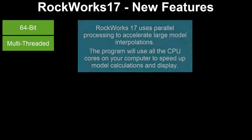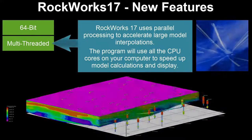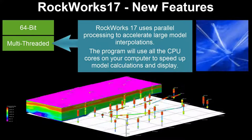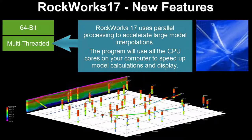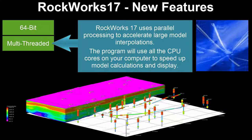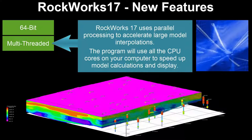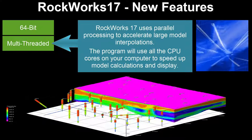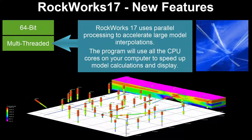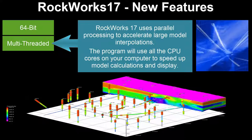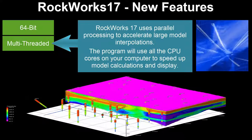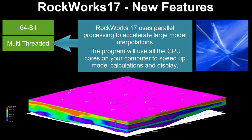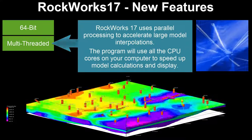RockWorks 17 uses parallel processing to accelerate large model interpolations. The program will use all of the CPU cores on your computer to speed up model calculations and display.